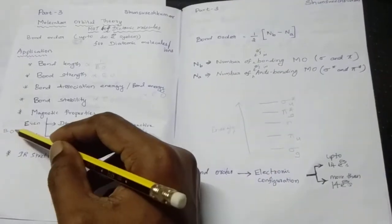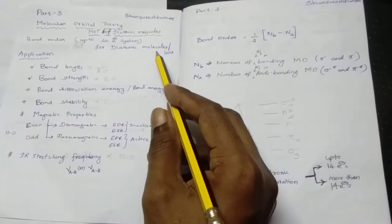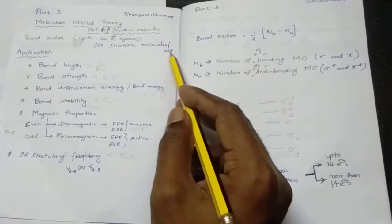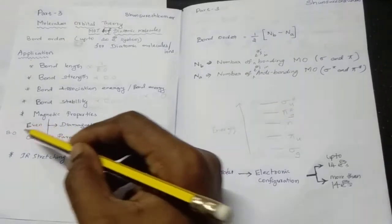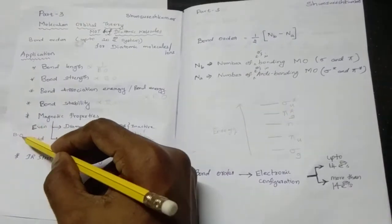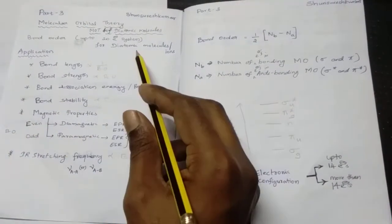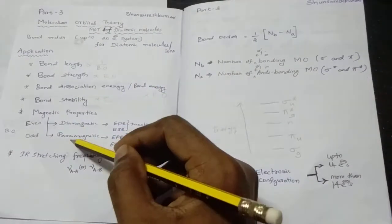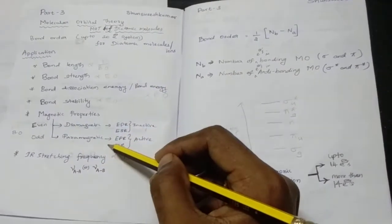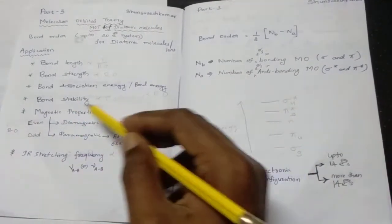If the bond order is even, the molecules or ions are diamagnetic. If the bond order is odd, the diatomic molecules or ions are paramagnetic. Okay, these are some advanced topics.